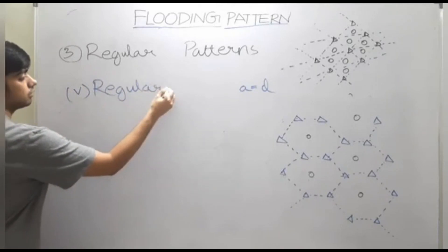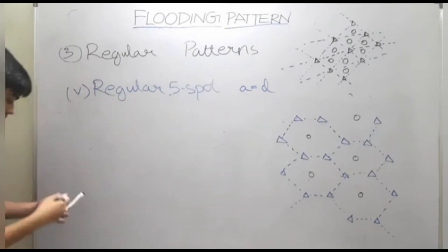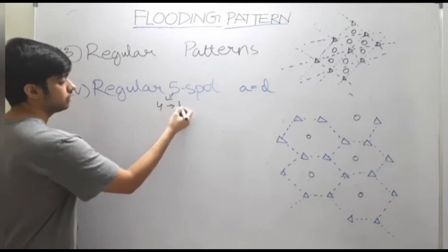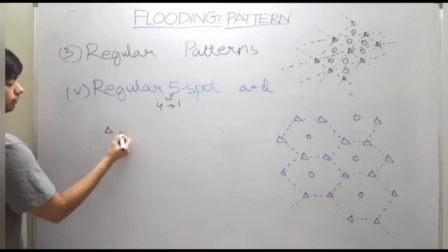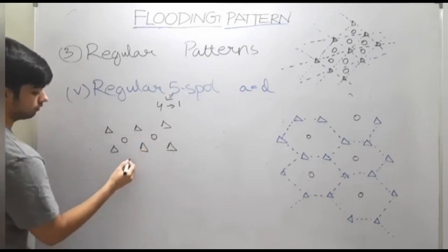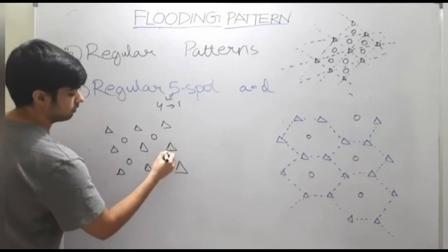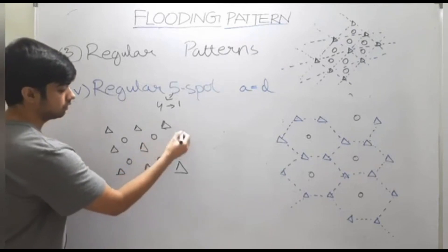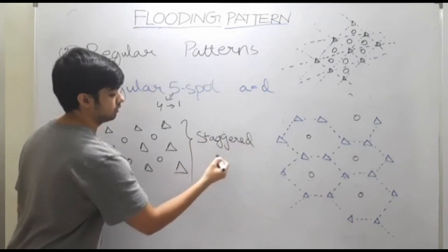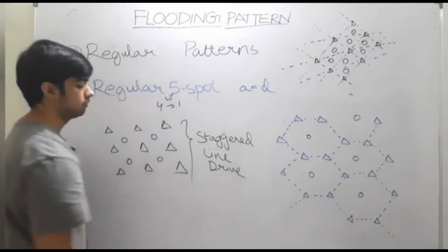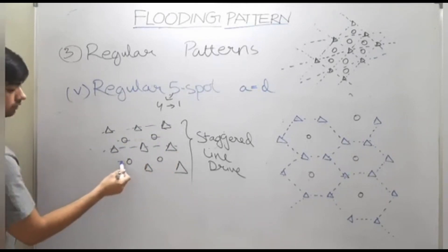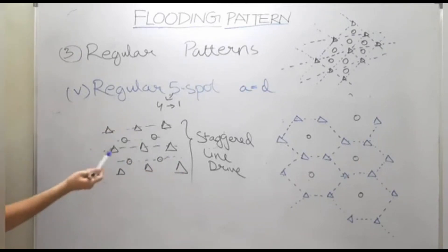Let us talk about the regular five-spot pattern. In this case, four injector wells will be in one unit and there will be one producing well in the center. This is how it will look. This specific pattern resembles a staggered line drive, where the producing wells are alternatively placed in between.